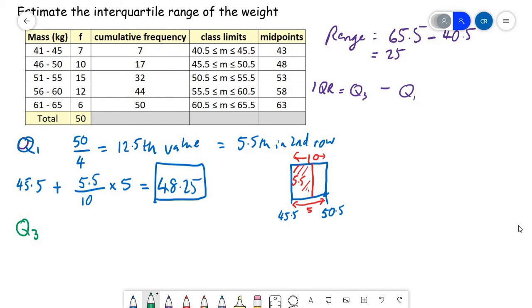Third quartile is going to be three quarters of the way through 50. So that's going to be the 37.5th value. So if we look down, we've used 32 values up to the end of the third group. So it's going to land in the fourth group. And if we've used 32 already, we're 5.5 again, the 5.5th value in the fourth row. So we want 5.5 out of, this time it's got a frequency of 12. The class widths are all 5. So we're multiplying by 5. And we add on to 55.5.